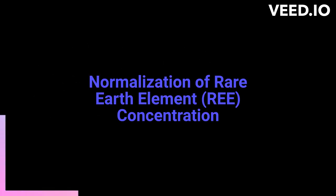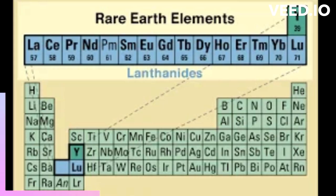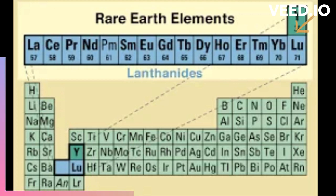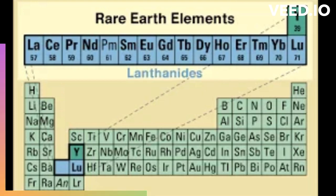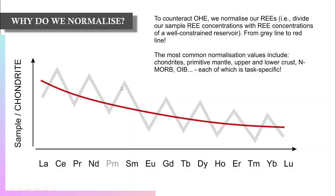In today's lesson we are going to learn more about normalization of rare earth element concentration. The rare earth elements are 15 elements that range in atomic number from 57 (lanthanum) to 71 (lutetium), commonly referred to as the lanthanides. These elements are commonly found together in Earth's crust because they share a trivalent charge (REE 3+) and similar ionic radii.